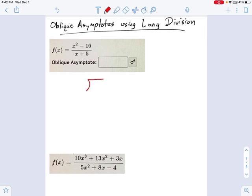where I have this x squared minus 16 divided by x plus 5. The result of this division will be our oblique asymptote. So the question here is, we're going to focus on the power functions.